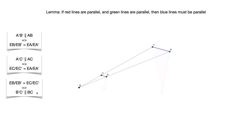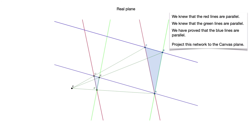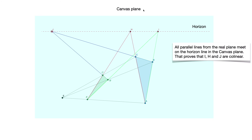We have proven the lemma and consequently the Zorch's theorem. Let's summarize: we knew the red lines are parallel, we knew the green lines are parallel, and we proved the blue lines are parallel. Projecting this network back into the canvas plane, we know that all parallel lines from the real plane meet on the horizon line in the canvas plane. That proves that I, H, and J are collinear, which is what the Zorch's theorem states.